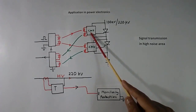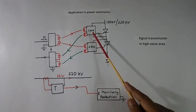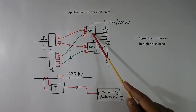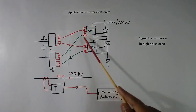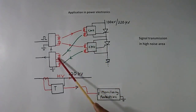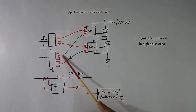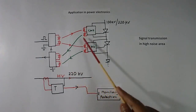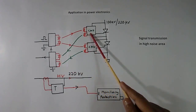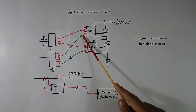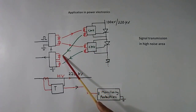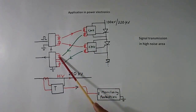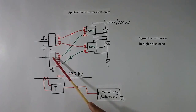Similarly, suppose we have to send some monitoring signal from the thyristor back to the control side. We use another cable in the reverse direction. The electrical signal is converted into an optical signal, transmitted via fiber optic cable, and then converted back into an electrical signal.